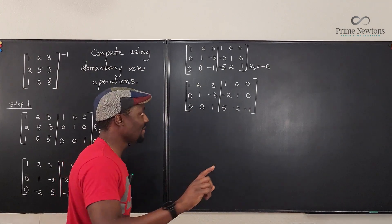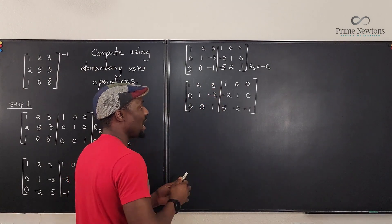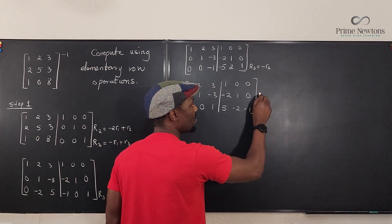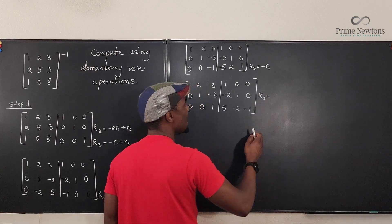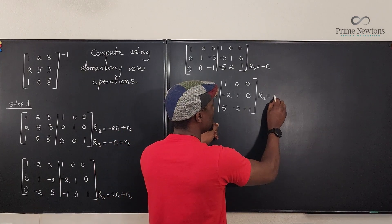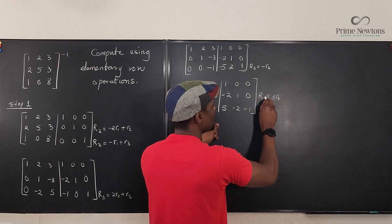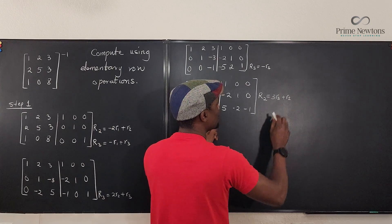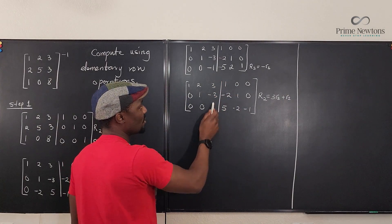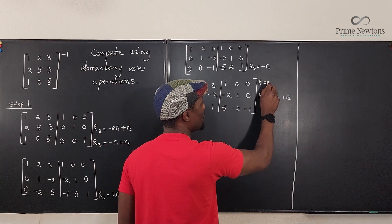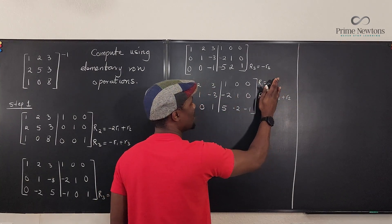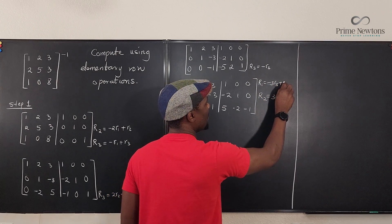We're going to add three of row three to row two, and subtract three of row three from row one. So new row two = 3·R3 + R2, and new row one = -3·R3 + R1. We're not modifying the bottom row, so we just copy it: 0, 0, 1 | 5, -2, -1.